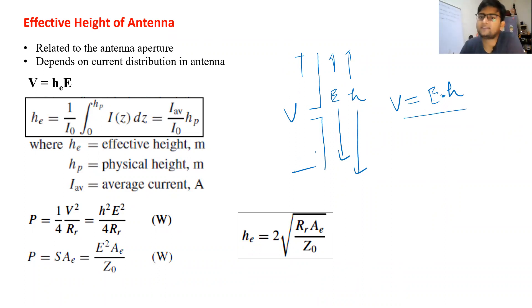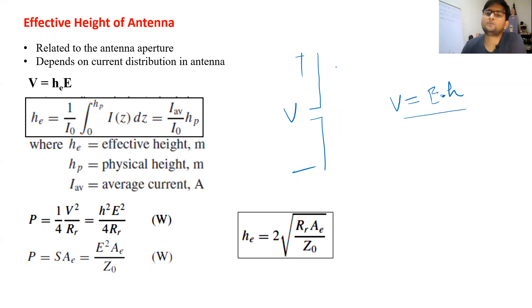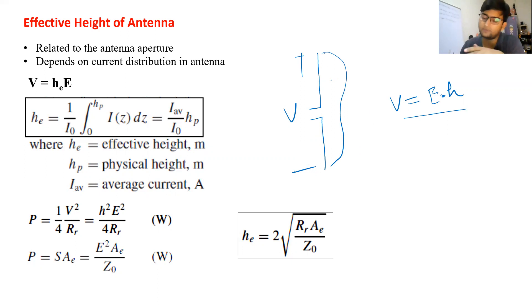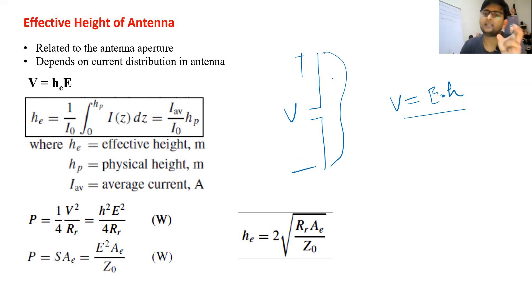The distribution of current or voltage is non-uniform across the length of the antenna because the wavelength of the voltage or current at the operating frequency is comparable to the dimension of the antenna. That is why we talk about a term called effective height, he, which works in place of the actual height.